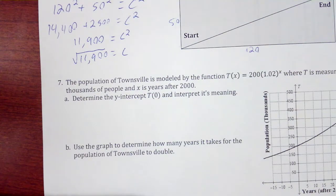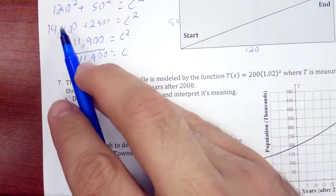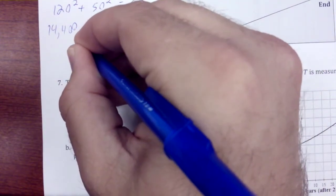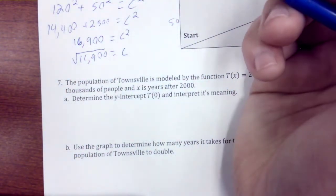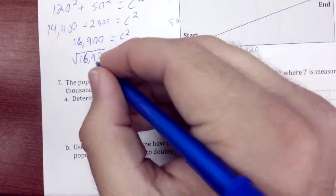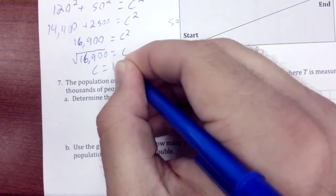11,900, taking the square root of it. Unless I've made a mistake somewhere. Clearly, I made a mistake right here. I'm supposed to add these, not subtract. So, 16,900. I'm going to take the square root of that, and I get c is equal to 130.